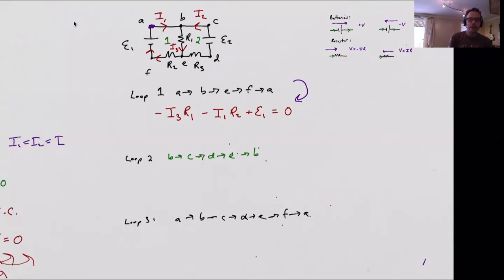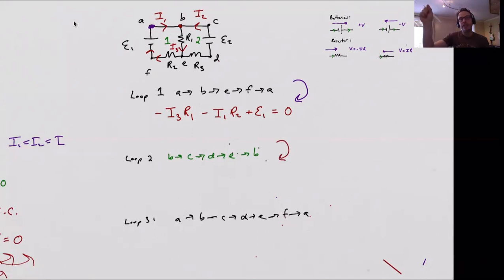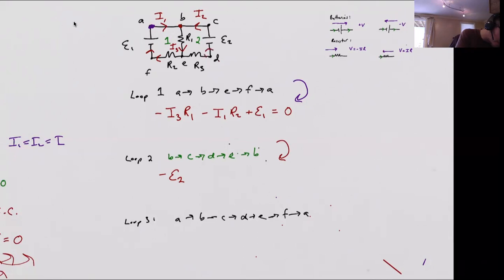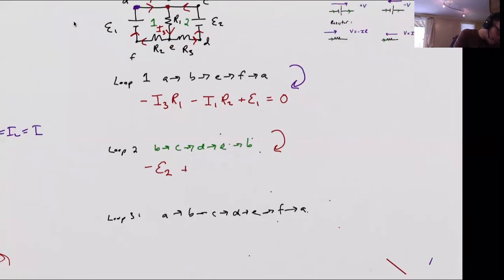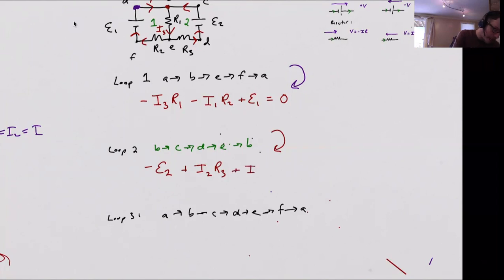For loop two, starting from B and going around the rightmost loop: B to C — nothing happens. C to D — going across the battery in the wrong direction, so I lose E2. Then going against the current of the resistor, I pick up I2·R3. From E back to B, I'm going against the current — so I pick up I3·R1. Those equal zero. That's the equation for loop two.